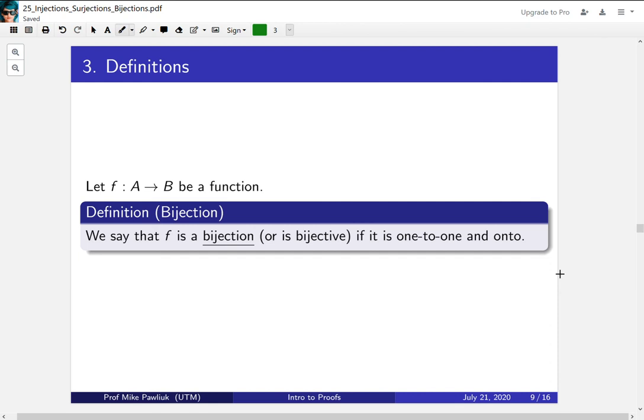Finally, we combine these two definitions to say that a function is a bijection, or is bijective, if it is both one-to-one and onto.